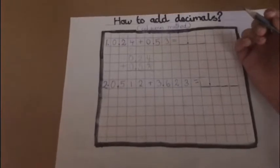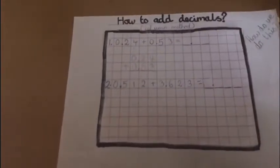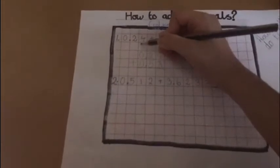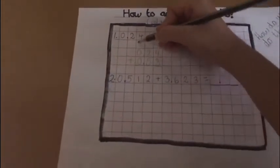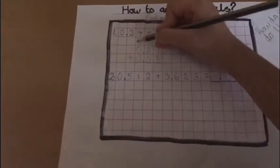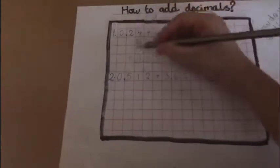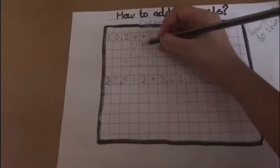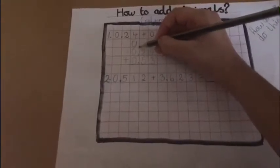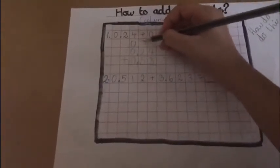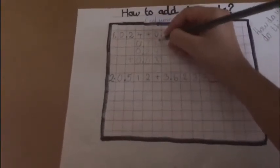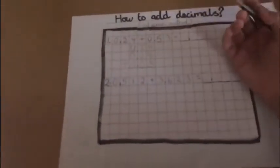To help you, you could always write above the numbers the units, then the decimal point, tenths, hundredths, and that's all.